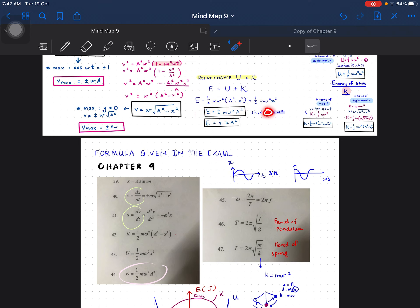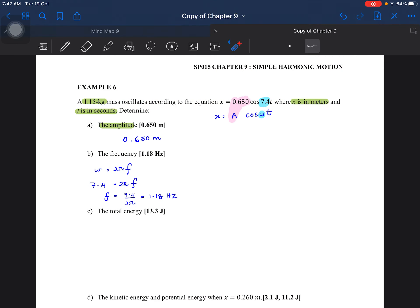So alternatively, you can use E equals to half K A squared. Tapi, ini dia kasi kita mass. So kita akan buat guna this one. This one, the total energy. So just go ahead. This formula will be given in the exam. So you just know how to use it. So mass is 1.15, omega is 7.4 square, A is 0.65 square.